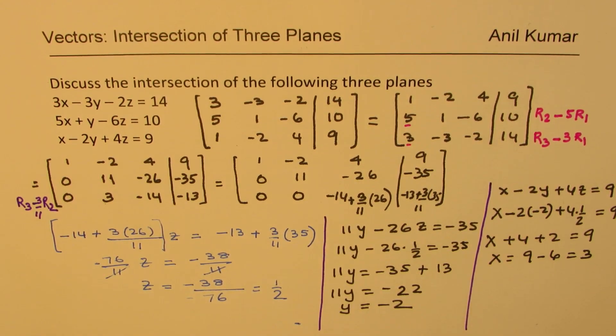So x is equals to 9 minus 6, which is 3. So we get the x value as 3.